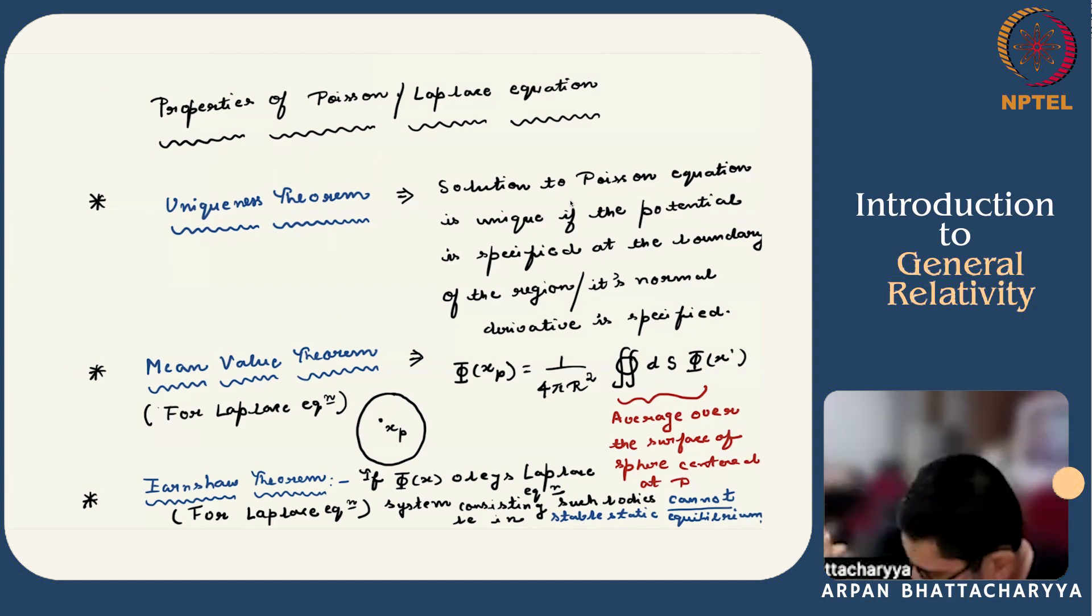Next is the Min-Max theorem. If the potential satisfies the Laplace equation, that is you are solving it for a point outside the extended object, then Φ at a point xp is equal to the average of Φ over the surface of a sphere centered around this point. Let us consider this point xp and draw a sphere with radius R, then you take Φ at x and average over the surface of this sphere, which is shown by the surface integral. dS is the element surface element of the sphere centered at the point.